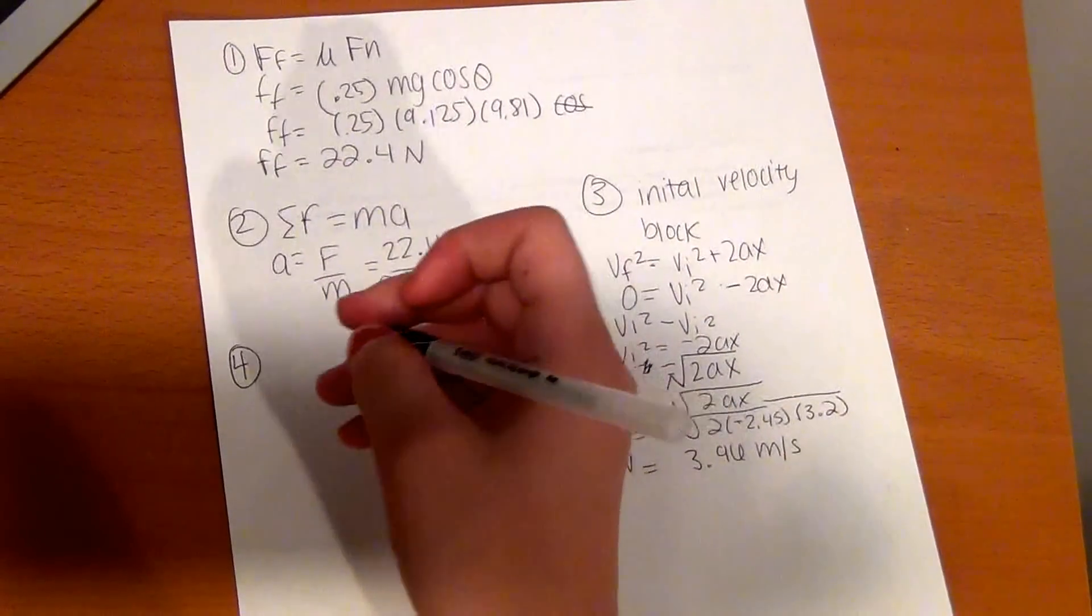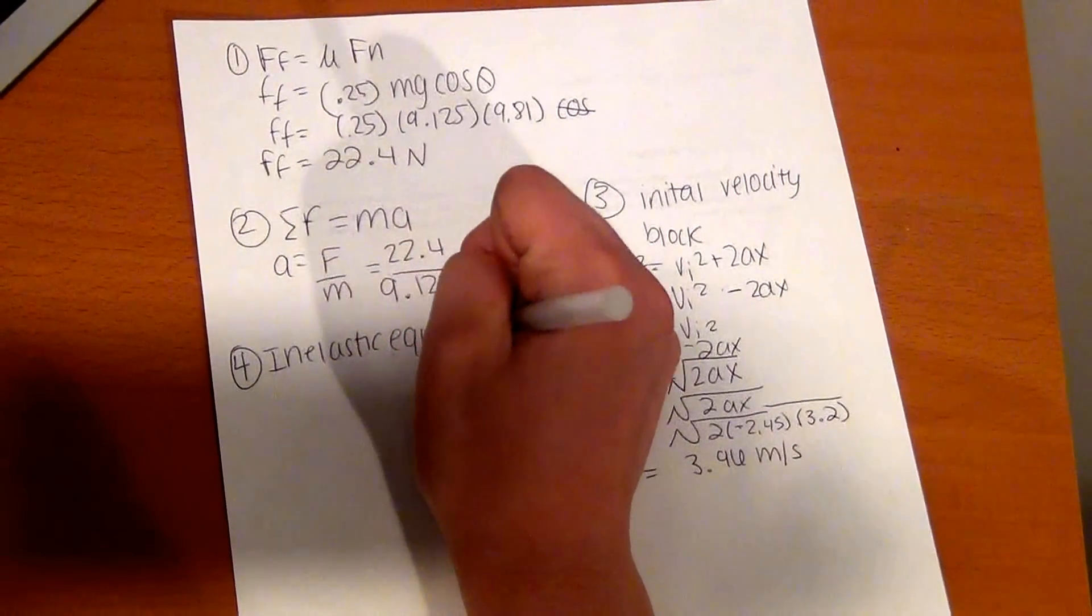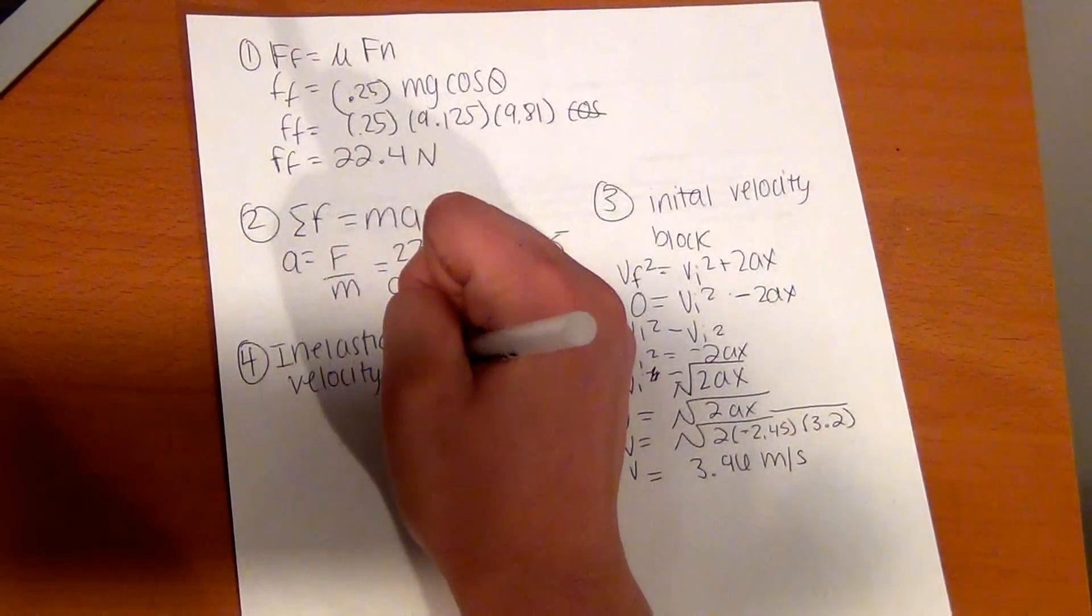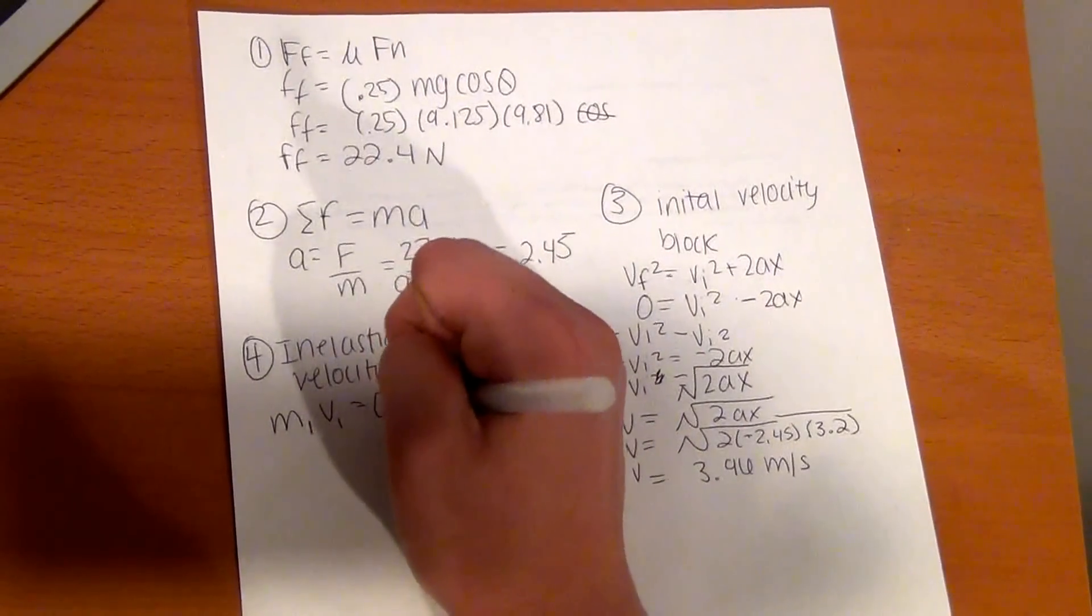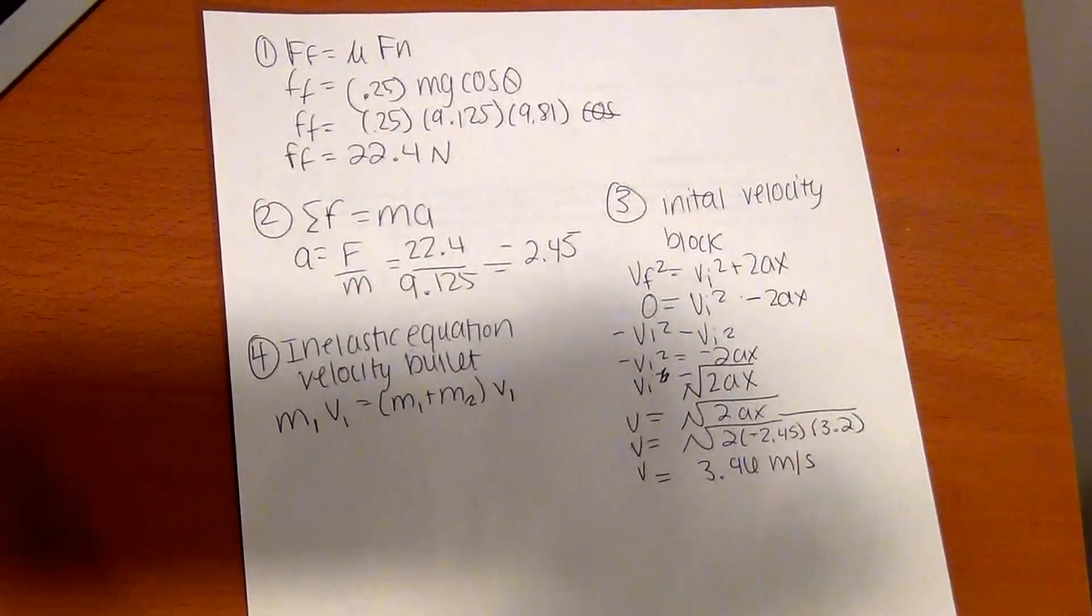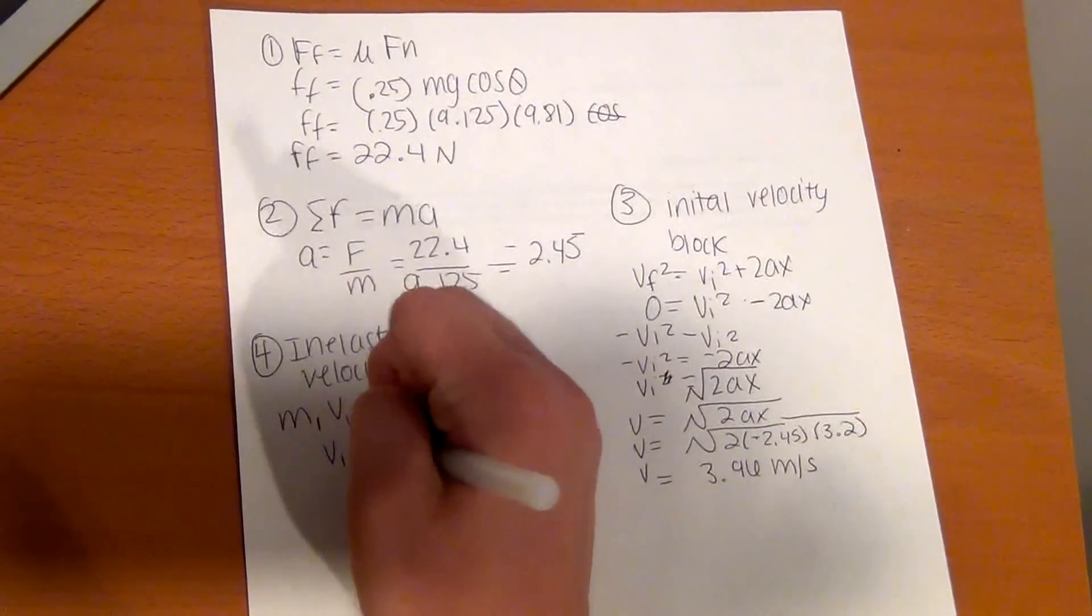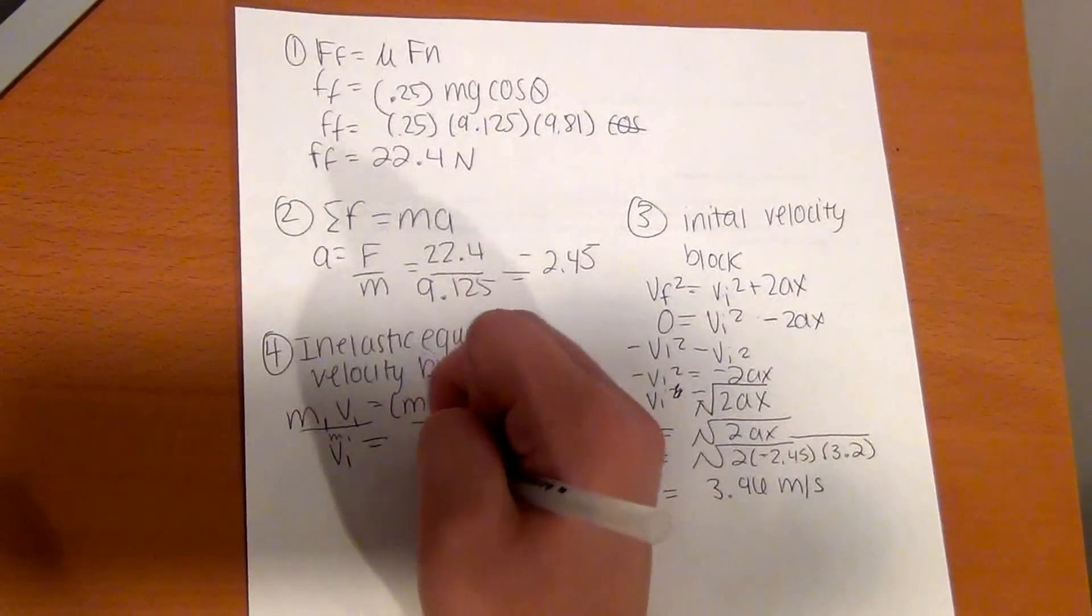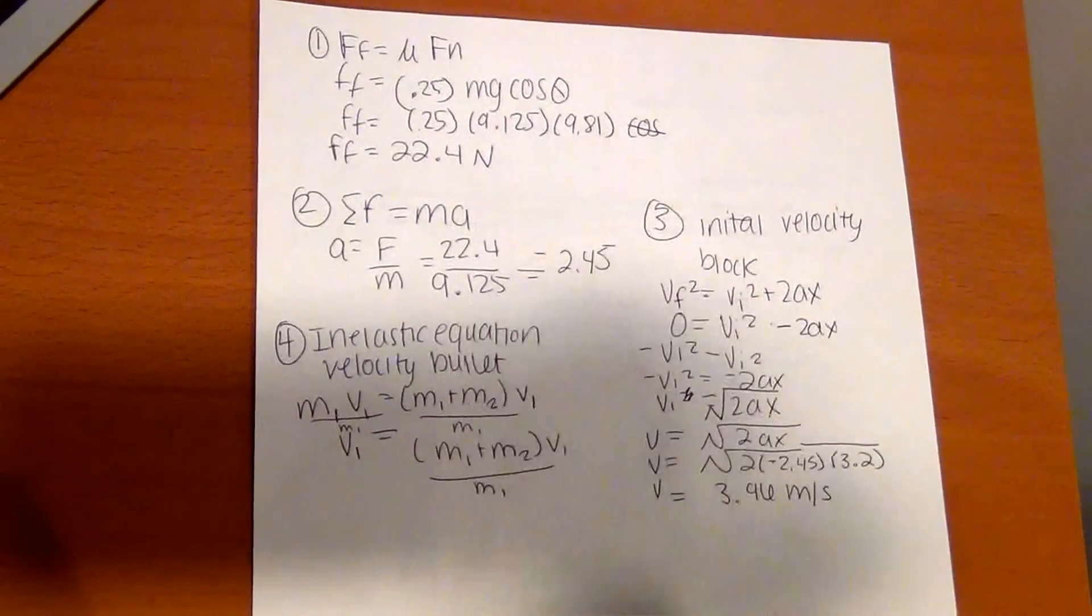Next, the last step: we're going to use the inelastic equation to find the velocity of the bullet. The inelastic equation is M1V1 equals, in parentheses, M1 plus M2, parentheses, V1. We want to get V by itself, so we're going to divide M1 to get V1 by itself. So V1 equals M1 plus M2, V1, all over M1. Once we have V isolated by itself, we can start plugging in numbers into our formula.